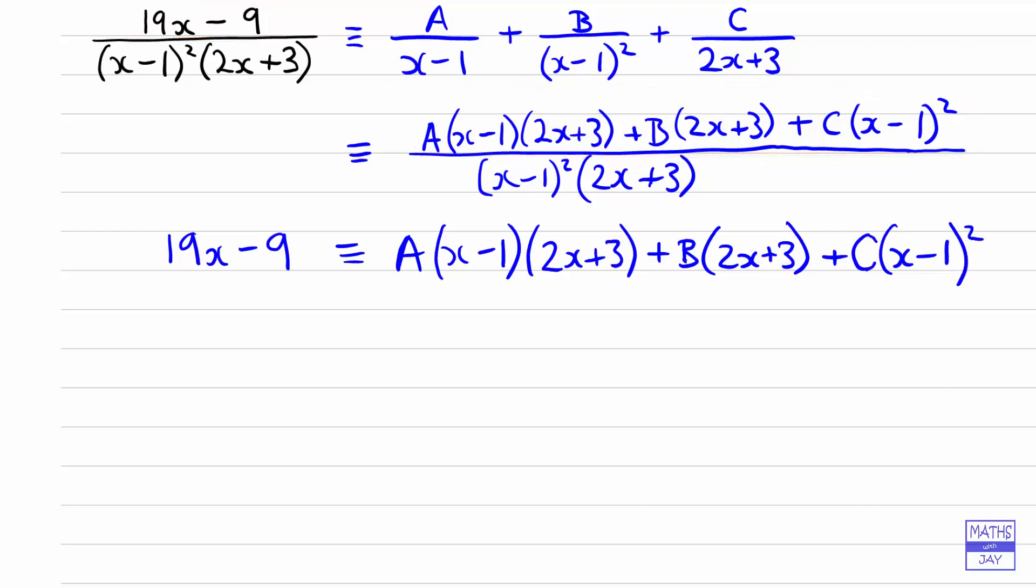So now what we want to do is simply find A, B and C. The simplest thing to do is to substitute in values for x that will make some of these brackets become 0. So remember, because this is an identity, we can substitute in any value for x that we like. But the simplest thing to do is to start off with zeroising some of these brackets. So let's go for the x minus 1 first of all. If we want x minus 1 to be 0, then that means that we want x to be equal to 1. So if we substitute in x equals 1 to both sides of the expression, the left-hand side is going to be 19 times 1 minus 9, so 19 minus 9.